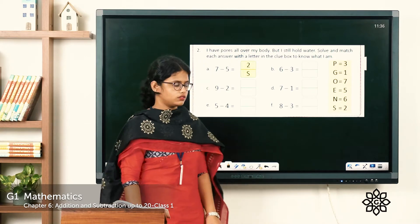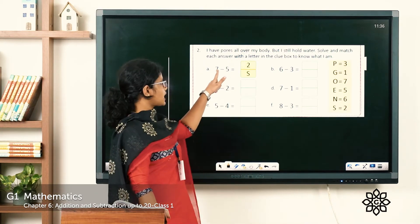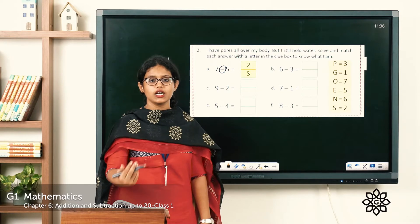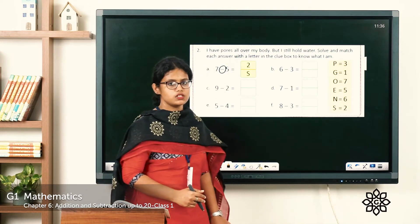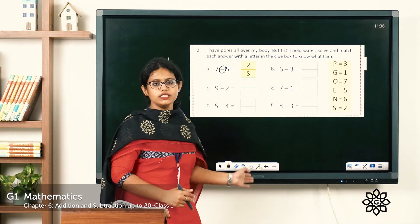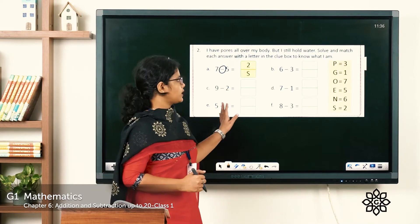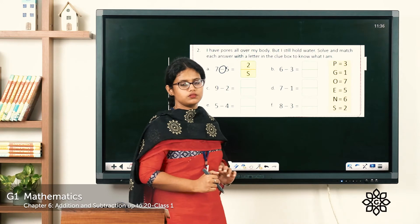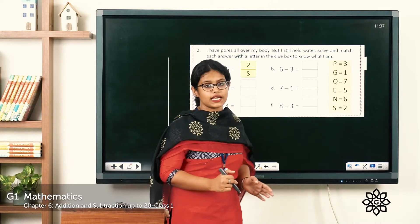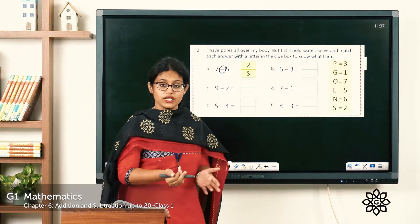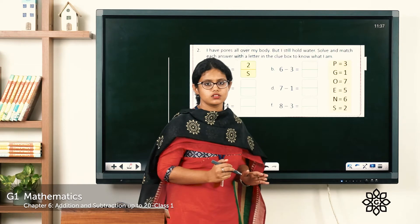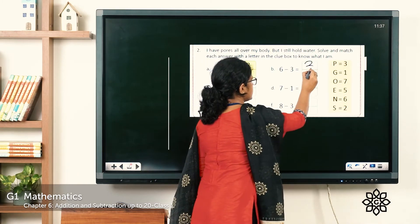Now we are going to solve subtraction problems. Subtraction means taking away. For each answer there is a letter in the clue box, and you have to write that letter under the box. The second problem is 6 minus 3 — draw 6 sticks and cut 3 sticks. The answer is 3, and the letter for 3 is P. Write P here.